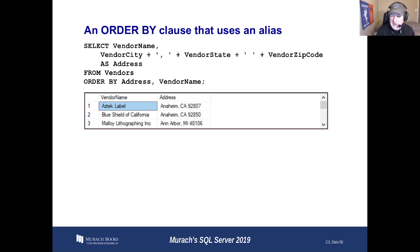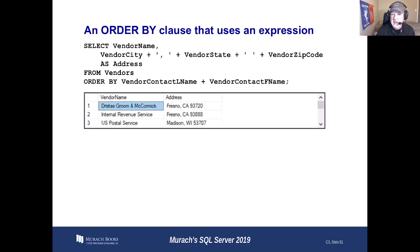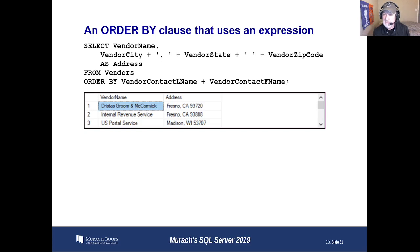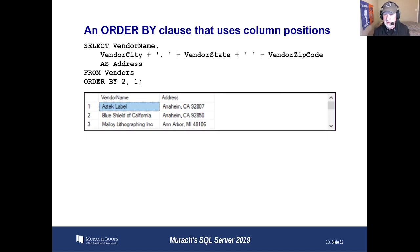Now it's going to make a liar out of me right away — because in transact SQL, well, in MySQL and Oracle, what I just said is perfectly true. In ours, we can use address. My bad, sorry. Here's another one: you can use an expression with order by — order by vendor contact last name plus vendor first name. There are all sorts of things you can do with order by.